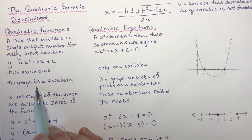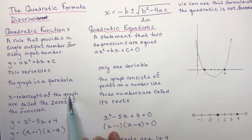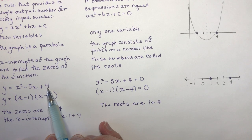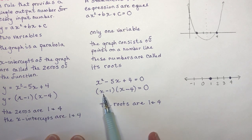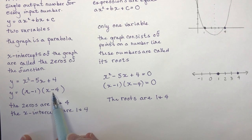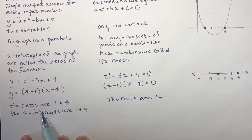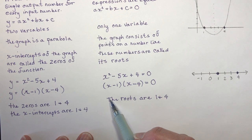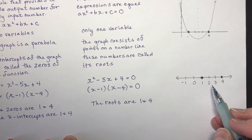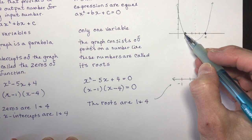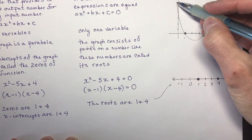The graph of a quadratic function is a parabola. The x-intercepts of the graph are called the zeros of the function. So when we factor this quadratic equation, we get the same thing, but they're giving us different solutions. This is telling us that the zeros are 1 and 4, or the x-intercepts are 1 and 4. Those two can be used interchangeably — zeros or x-intercepts of a function. Quadratic equations, on the other hand, have roots. So the roots here are 1 and 4.